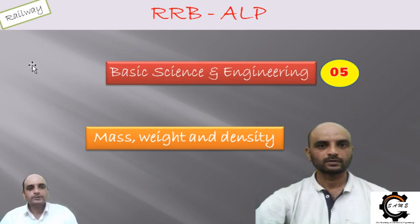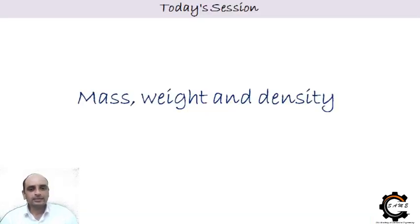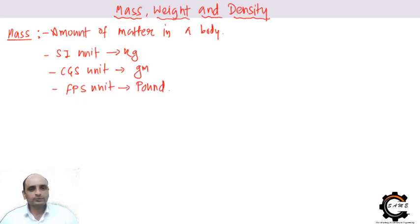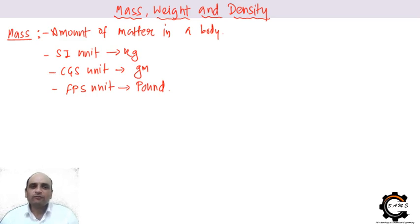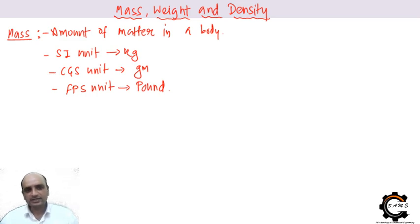The mass is the amount of matter in the body. Mass and weight are totally different. Mass is measured in kilograms, and weight is measured in Newtons. Weight is actually a force, but mass is not a force — it is the amount of matter, atoms, and molecules inside the body. The SI unit for mass is kg, CGS is grams, and the British system uses pounds.